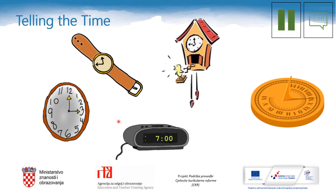Do you know the English word for this picture? What is it? You are right — it is a watch. You wear it on your wrist. What about this one? You can usually find it on the wall. You are right — it is a clock.